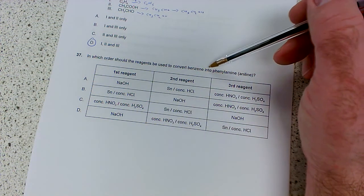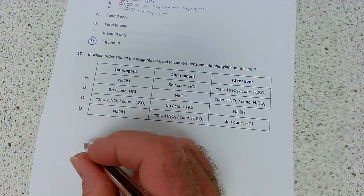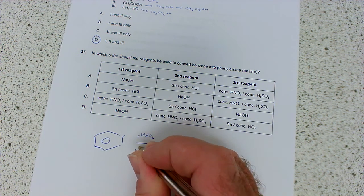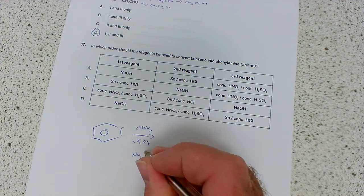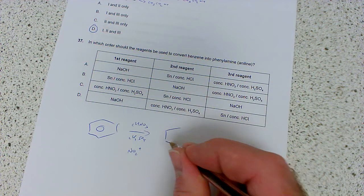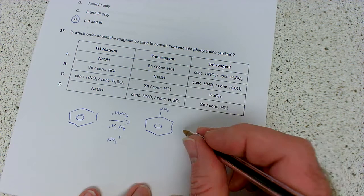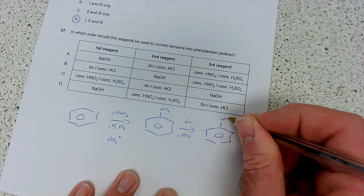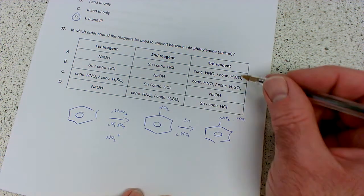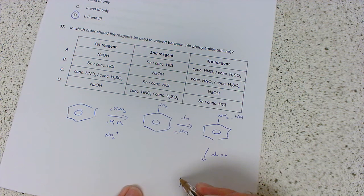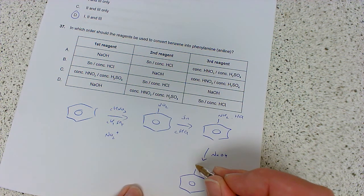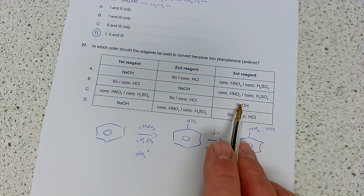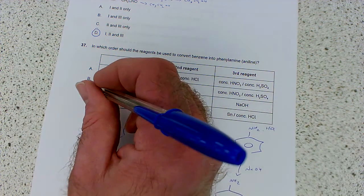In which order should the reagents be used to convert benzene into phenylamine? First, react benzene with concentrated nitric acid and sulfuric acid. These give access to the nitronium ion, producing nitrobenzene. Then reduce the nitrobenzene with tin and concentrated HCl to give the amine, which will be protonated in strong acid. Third, treat with sodium hydroxide to get the free amine. The answer is C: nitration, reduction of the nitro group, then neutralization.